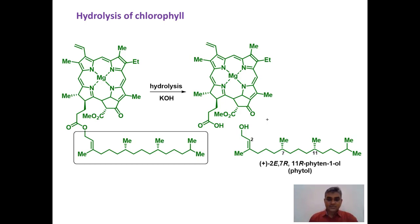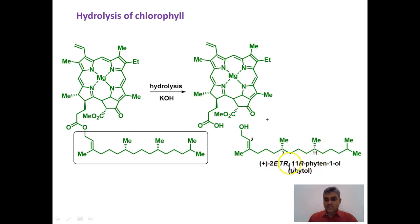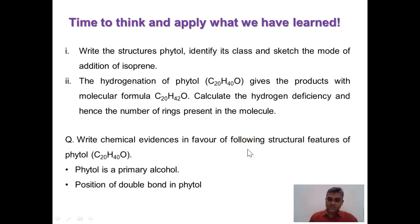The last part of the lecture concerns the hydrolysis of chlorophyll. Phytol is a substructural unit of chlorophyll, vitamin K, and vitamin E. When chlorophyll is subjected to hydrolysis in the presence of KOH, the naturally occurring phytol molecule is released. This naturally occurring phytol contains two chiral centers at carbons 7 and 11, with absolute configuration R,R according to the CIP method. The double bond at carbon 2 has E configuration, since the CH2OH group is trans to the longer chain, giving an E configuration.